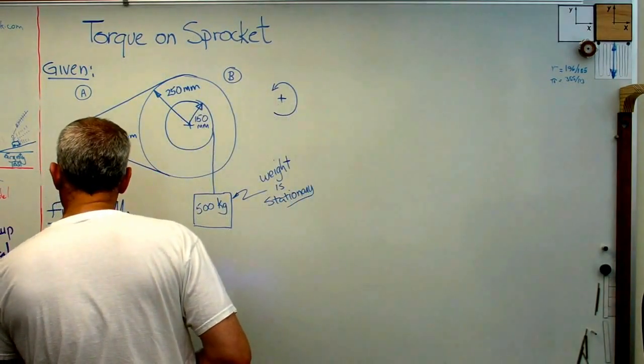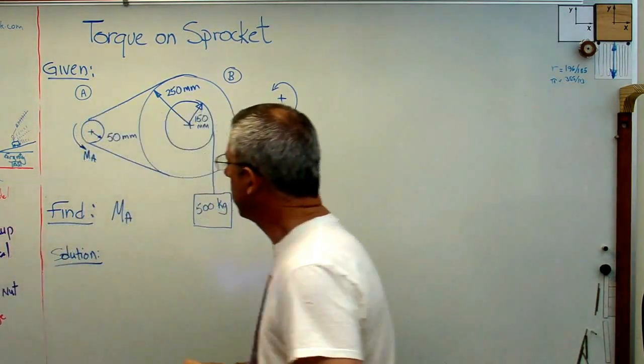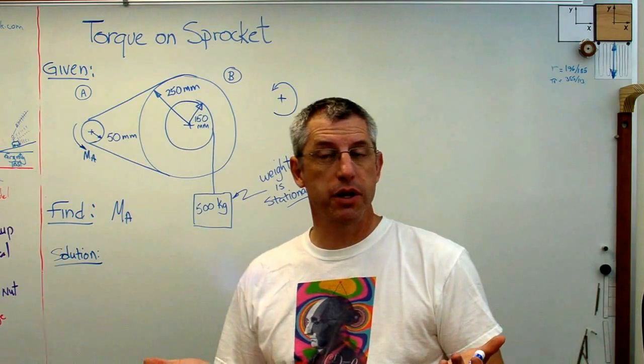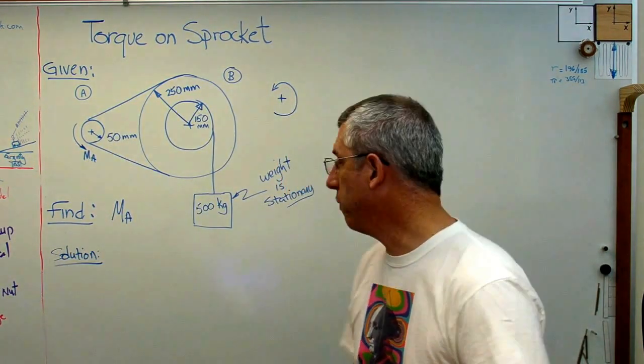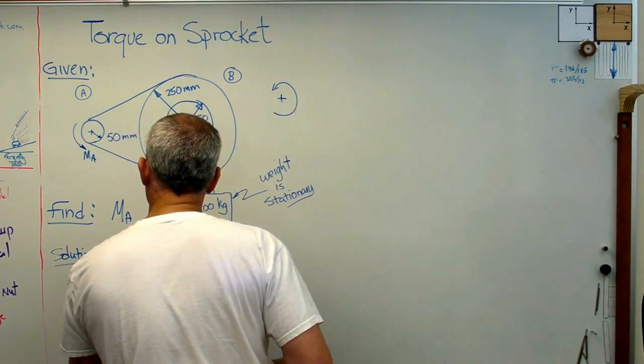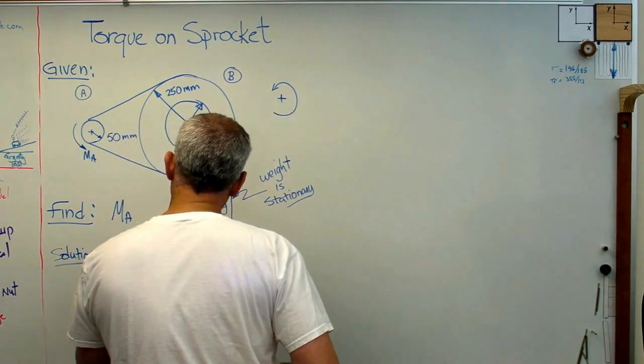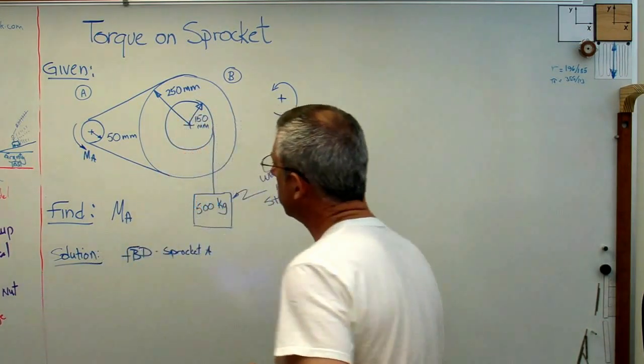Okay, we can do that. So we'll write out solution. That's the next step. G, F, S. We're up to the S part. Now, every other statics problem we've done, they've all started with a free body diagram, and this one's no different. So what I'm going to do is draw a free body diagram of sprocket A.